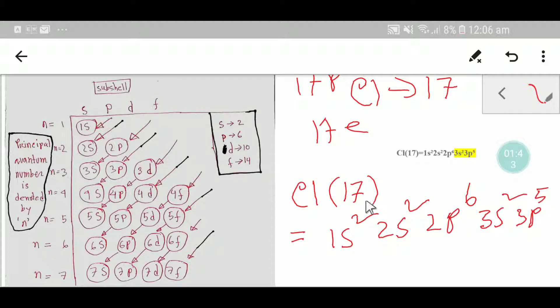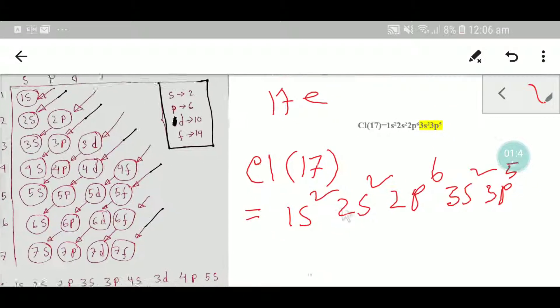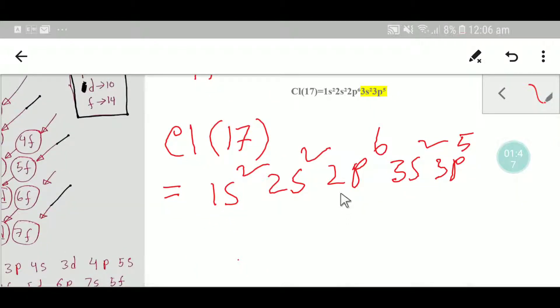So you have here 17 electrons for chlorine.